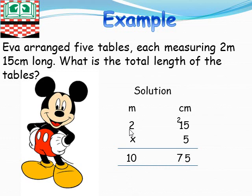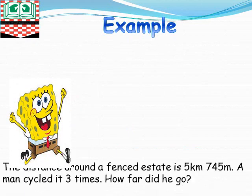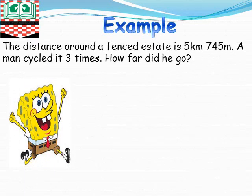Now, let's move to the next example. The distance around the fenced estate is five kilometers, 745 meters. A man cycled it three times. How far did he go?